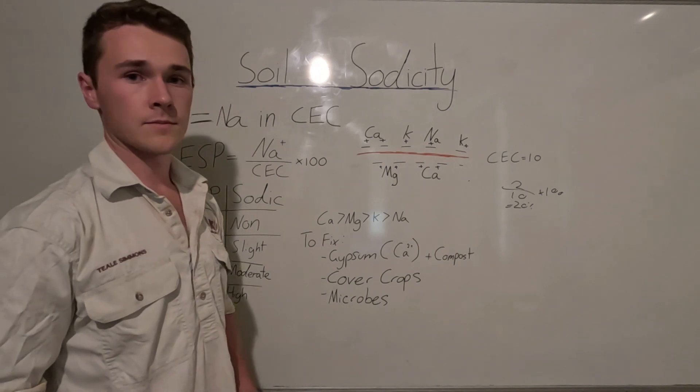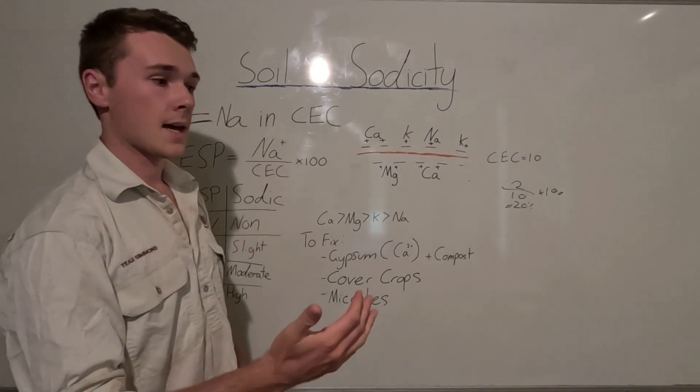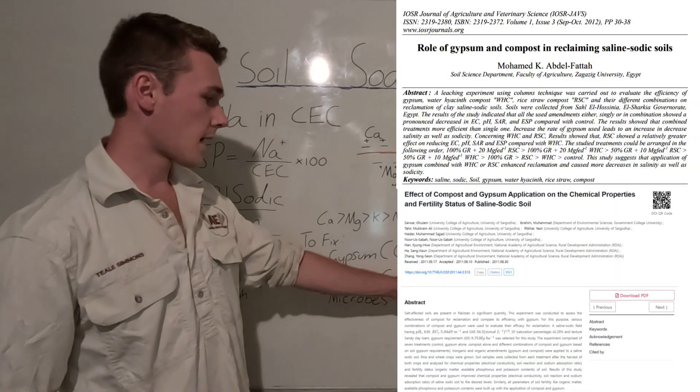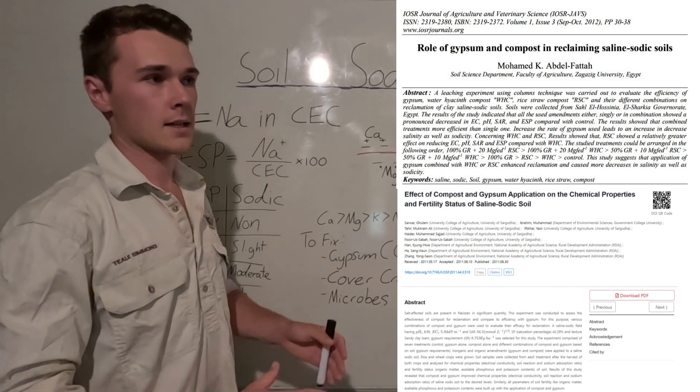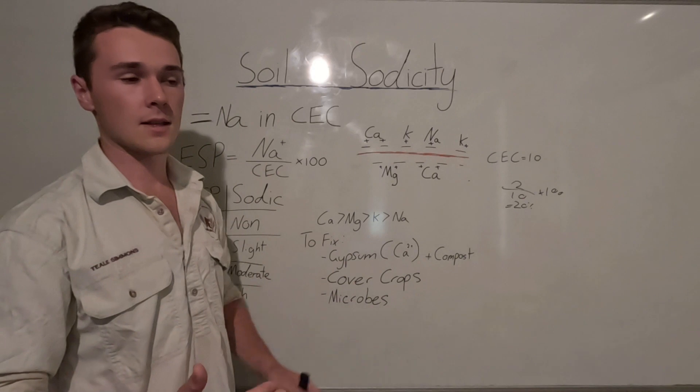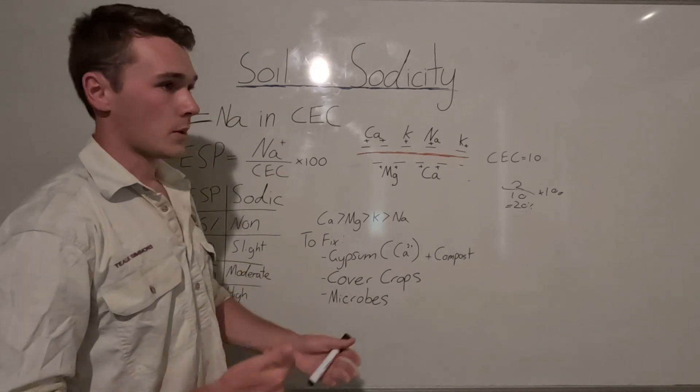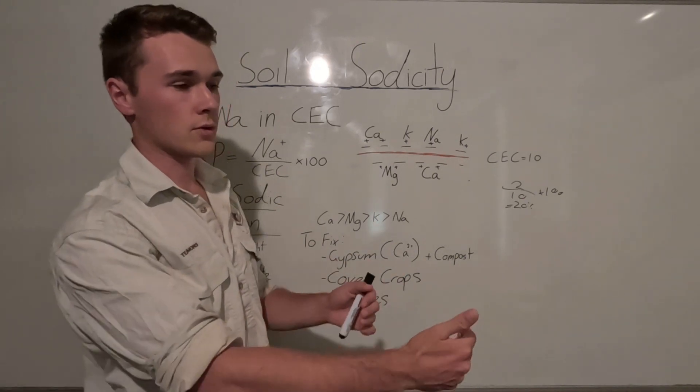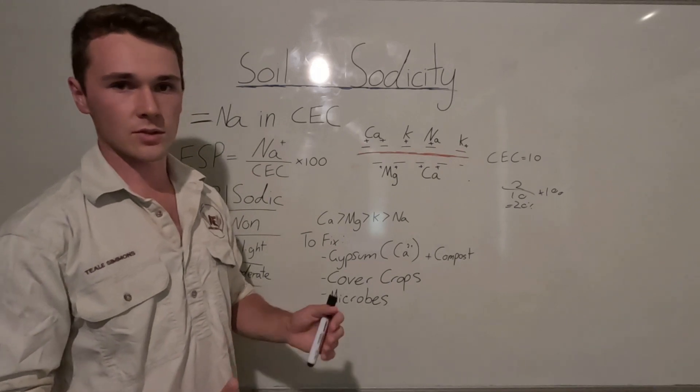Now there's a few research papers that suggest that adding a compost or an organic substance to our gypsum can increase the effectiveness of that. We can either increase the effectiveness or reduce the amounts of gypsum, so save costs that way.